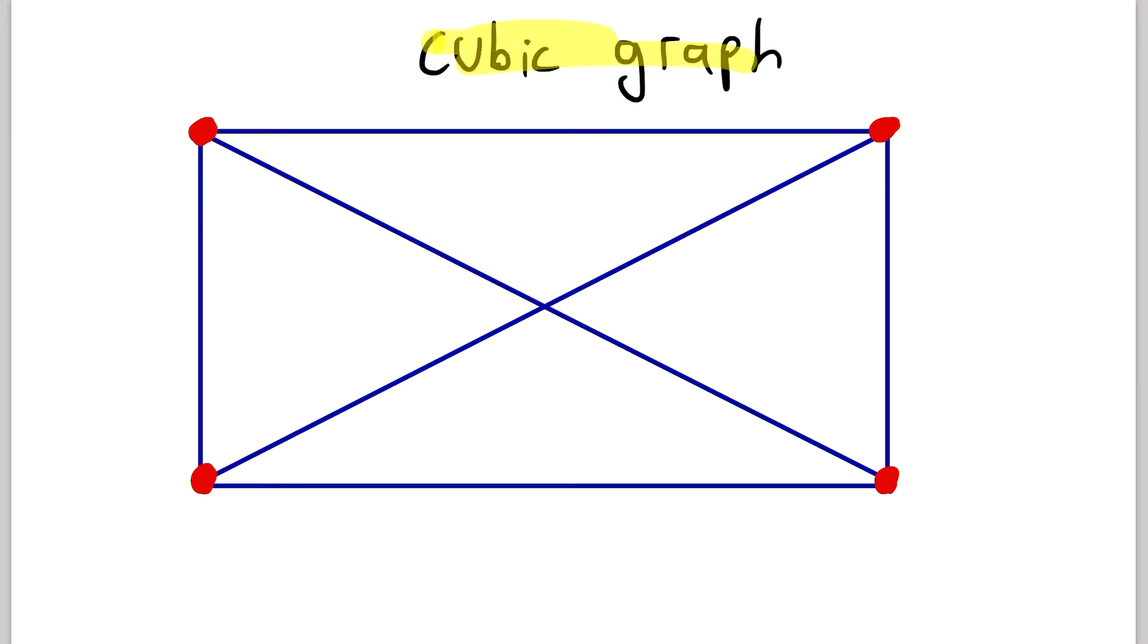A cubic graph is any graph that is three regular. That means that all of its vertices have degree 3. So if every vertex in a graph has degree 3, then it is a three regular graph, which means it is a cubic graph.